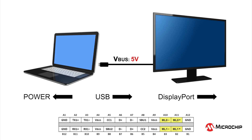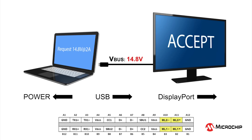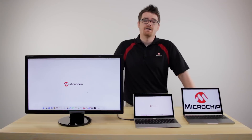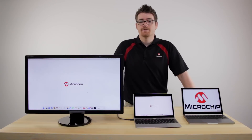Once the data connections have been reconfigured, the notebook then requests its final high voltage power contract from the monitor. This notebook needs 14.8 volts, so it makes this request from the monitor. Upon accepting, the monitor then transitions the 5-volt V-Bus to 14.8-volt V-Bus and the docking sequence is completed. This kind of USB solution where both the data and power type and direction can be dynamically reconfigured is only made possible thanks to USB-C using the extended capabilities of the USB Power Delivery protocol.